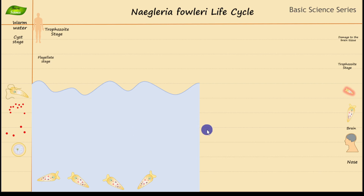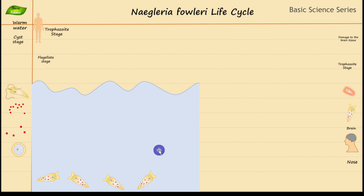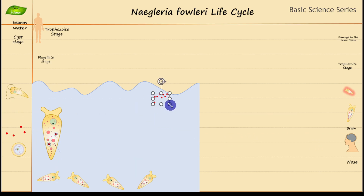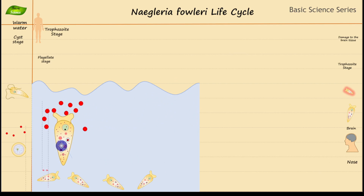Naegleria fowleri is not intentionally infecting humans. It can survive in the environment and there is no need for any host — this parasite does not have an obligate host and does not require a specific host. It can live and survive nicely in the environment. The trophozoite form is the motile form; it can feed on bacteria. As long as food and nutrients are available, it will live in that water body without changing form.